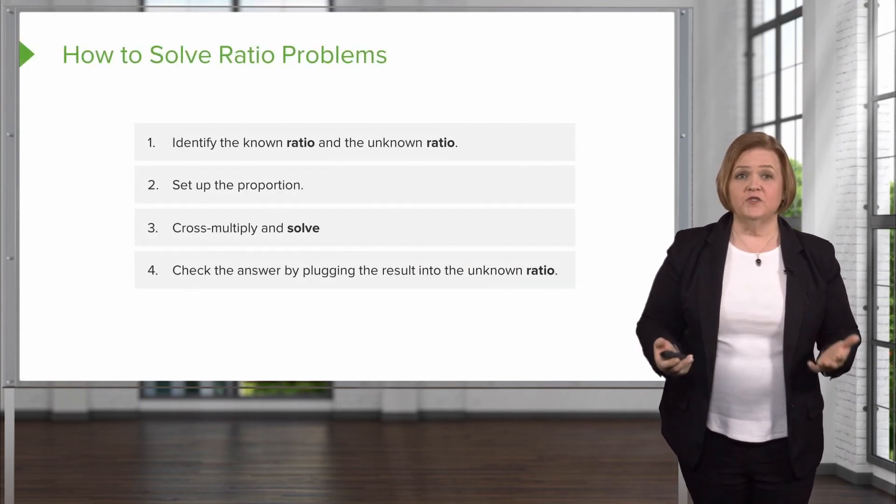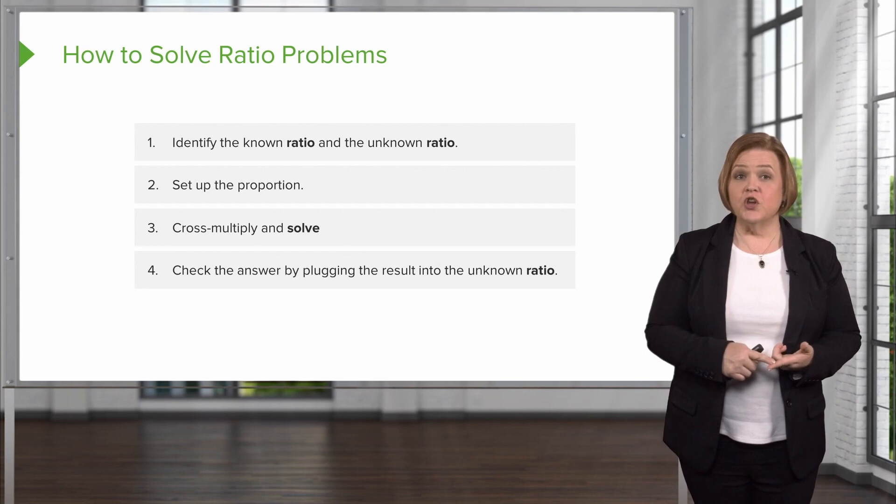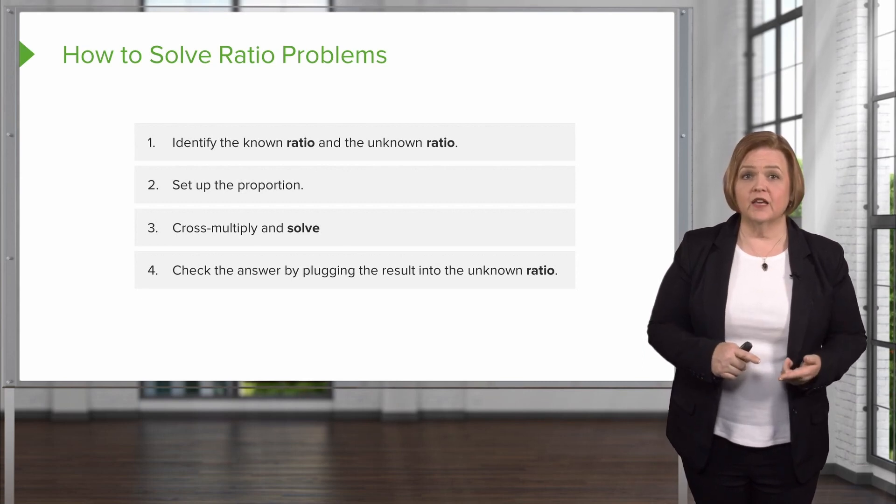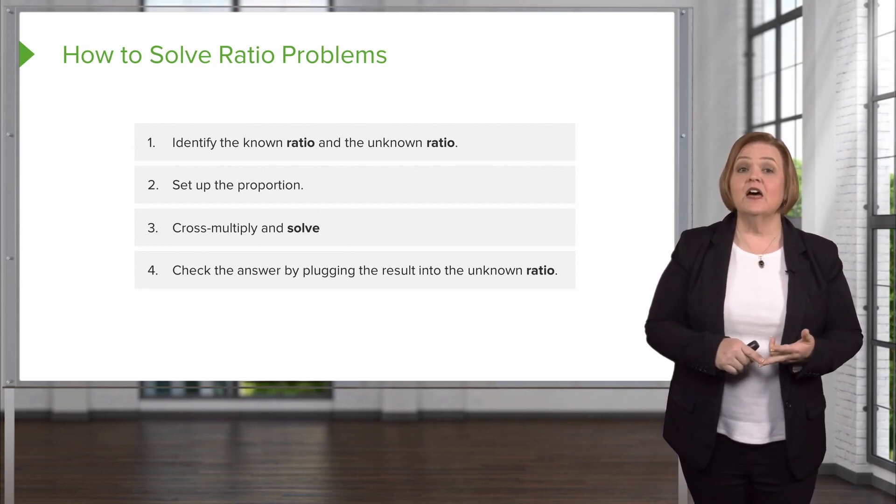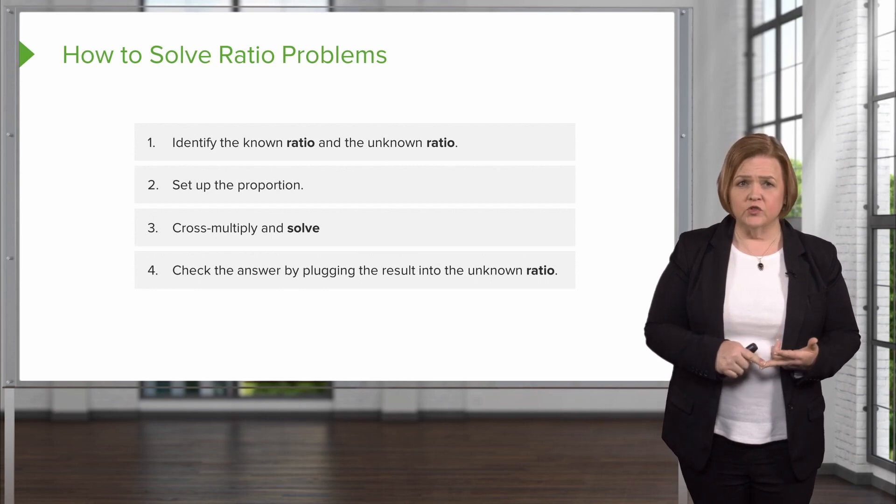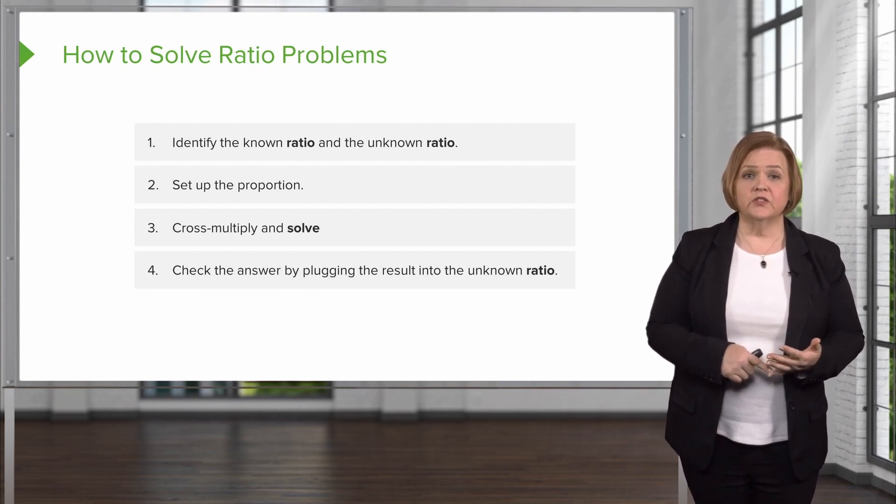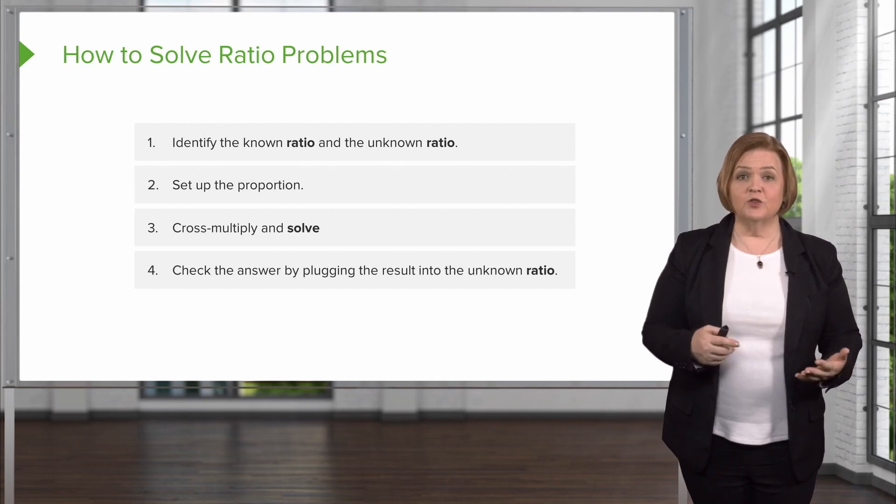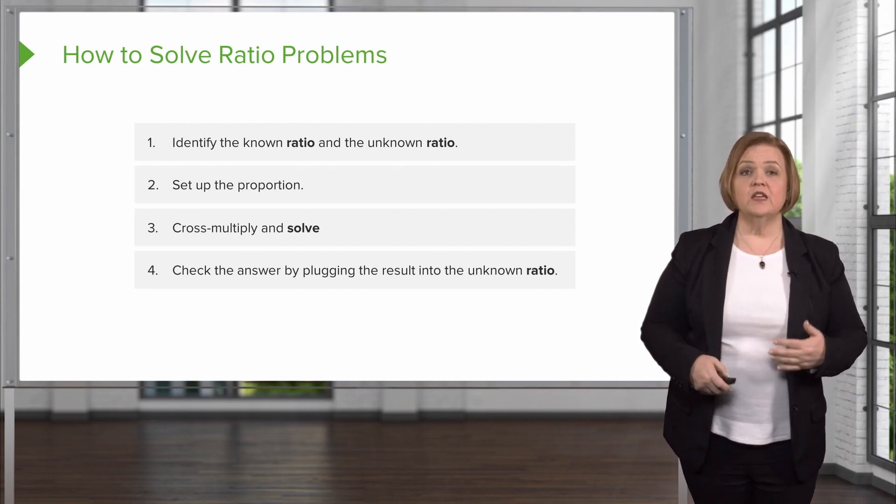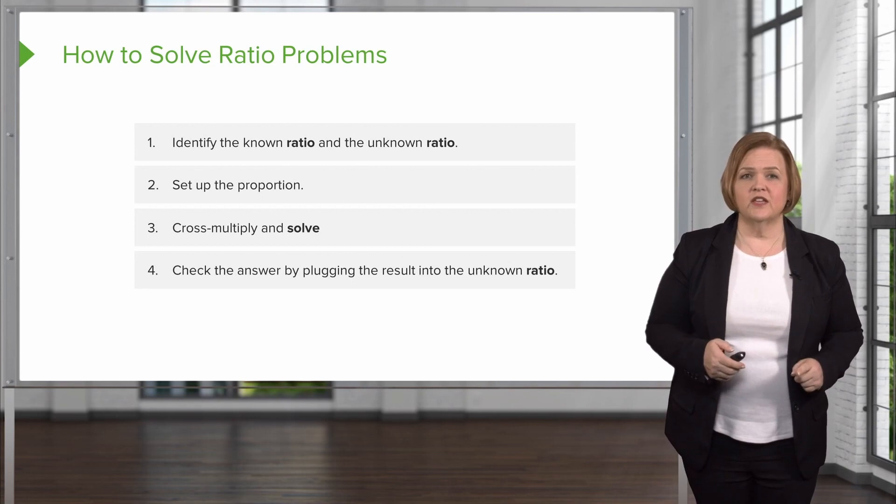Now here's our basic rules. You've seen these before. You identify the known ratio, which we did on the previous slide. Now we have to identify the unknown ratio based from the physician's order. You set up the proportion, cross multiply and solve, and then check your answer by plugging your result into the unknown ratio just as a safeguard for your patients.